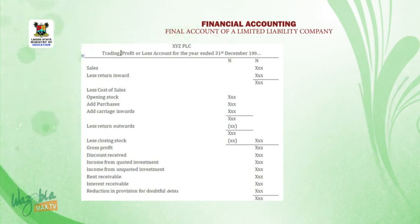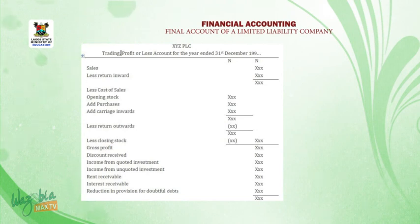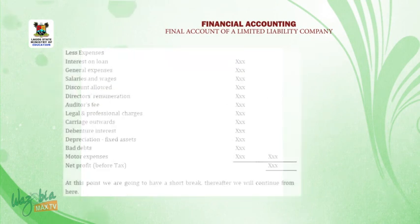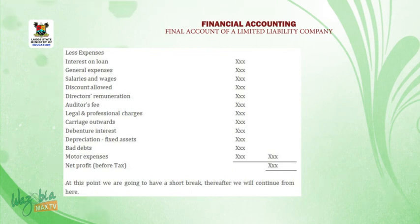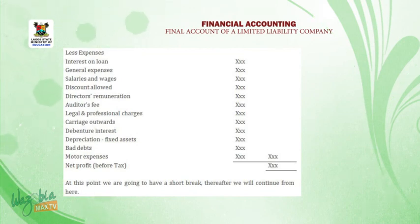The following items are also added to gross profit on the profit or loss account side: discount received, rent receivable, interest receivable, income from quoted and unquoted investments, and reduction in provision for doubtful debts. All these are added to gross profit to get a sub-total. We then less operating expenses: interest on loan, general expenses, salaries and wages, director's remuneration, auditor's fee, legal and professional charges, debenture interest, depreciation on fixed assets, carriage outward, and bad debts.